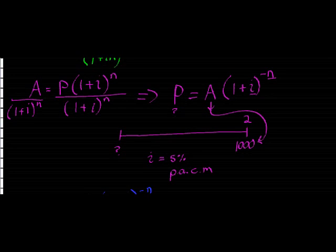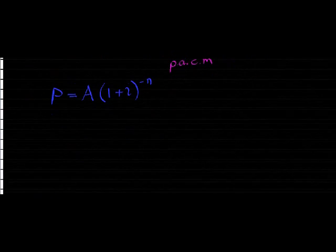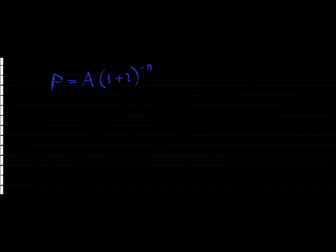So here's our formula that we are going to use to solve it. We've got that my present value is equal to my future value (1 plus i) to the power of negative n. Where my future value is 1,000 rand. That is what I'm going to get in 2 years time.